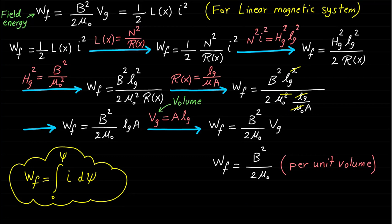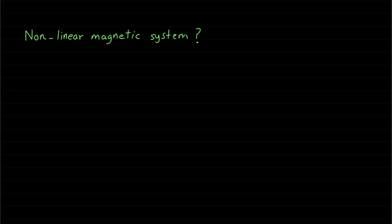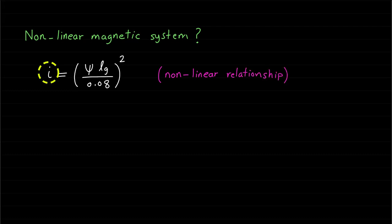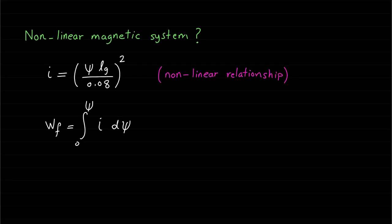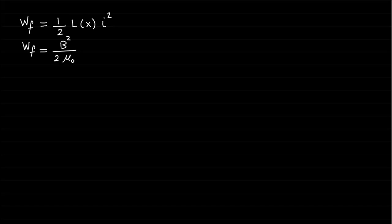Now, how about if we have a nonlinear magnetic system? Basically, if we have a nonlinear magnetic system, we should have a nonlinear relationship between the current I and the magnetic field linkage ψ. If we want to calculate the field energy for a nonlinear example, we can simply use the general formula of the field energy and substitute the current expression of the nonlinear magnetic system in the field energy formula.